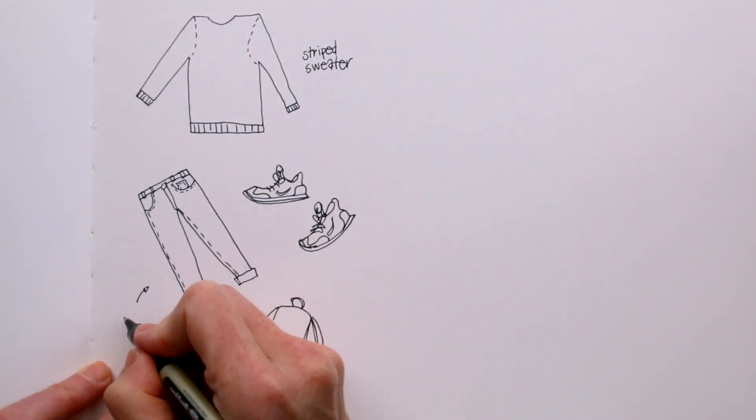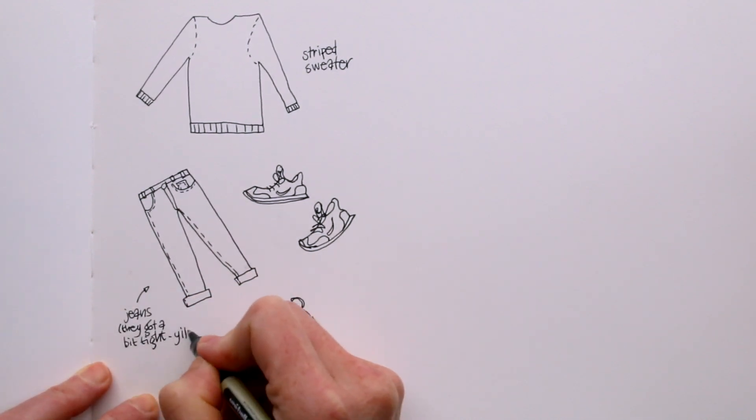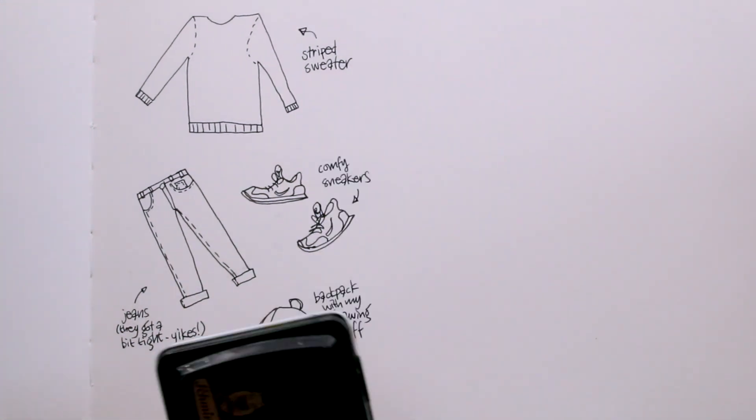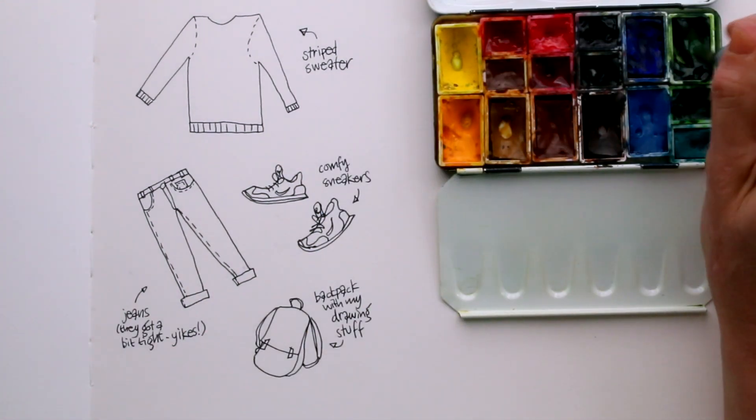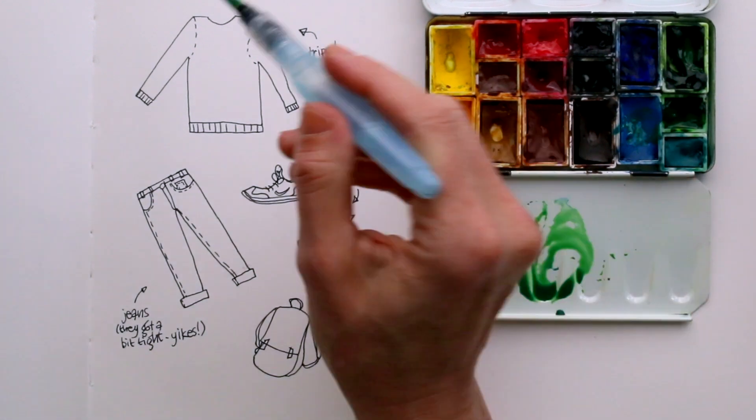And maybe some additional info, like those jeans are getting a little bit tight. I'm taking out my watercolors, and there we go, green stripes and blue jeans.